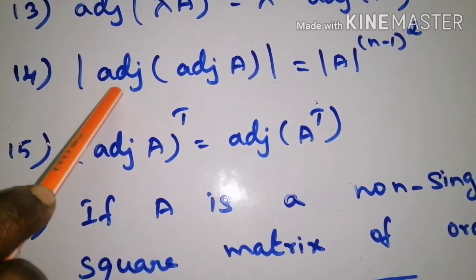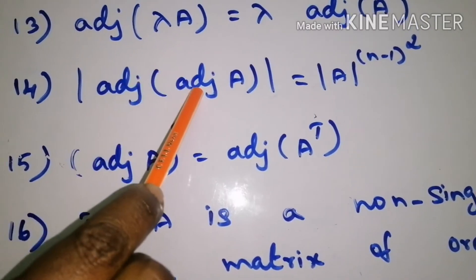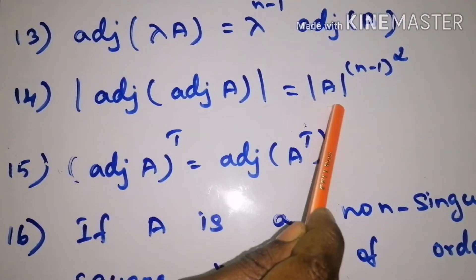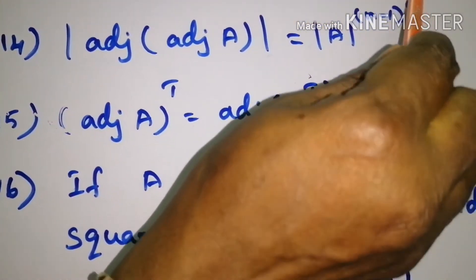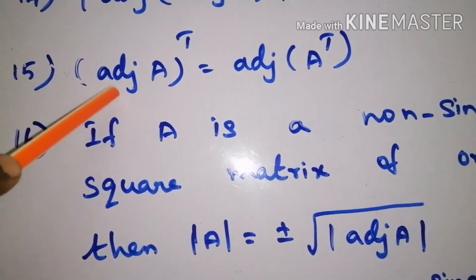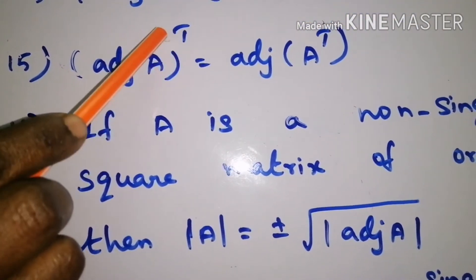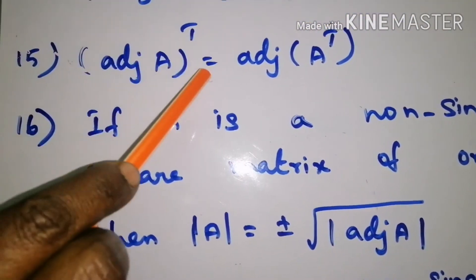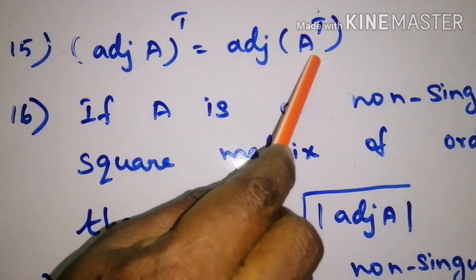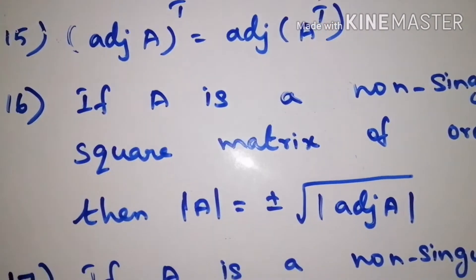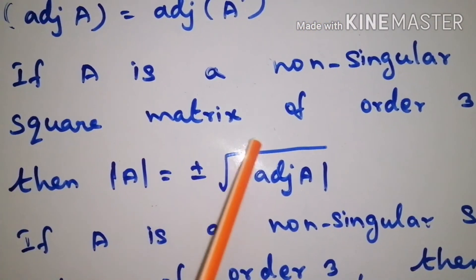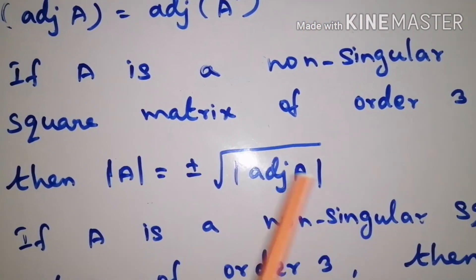Determinant of adjoint of adjoint A is equal to determinant of A power n minus 1, the whole square. Adjoint of A the whole transpose is equal to adjoint of A transpose.